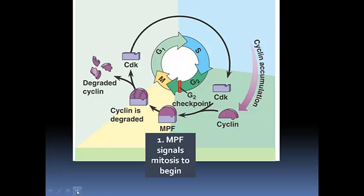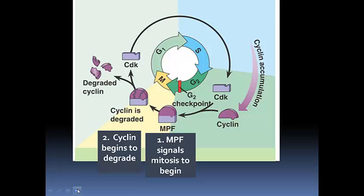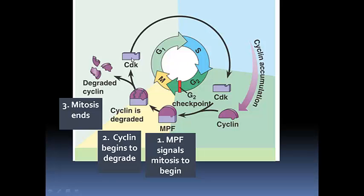The first thing that happens is the mitotic promoting factor — part cyclin and part CDK bound together — signals for mitosis to begin. When there's enough cyclin to make this MPF, mitosis starts. Over time though, the cyclin, the bright purple part, starts to break apart or degrade. If we don't have cyclin attached to the CDK anymore — the CDK is on its own — that means we don't have MPF anymore. So that's the end of mitosis. That's essentially what turns mitosis on and off.